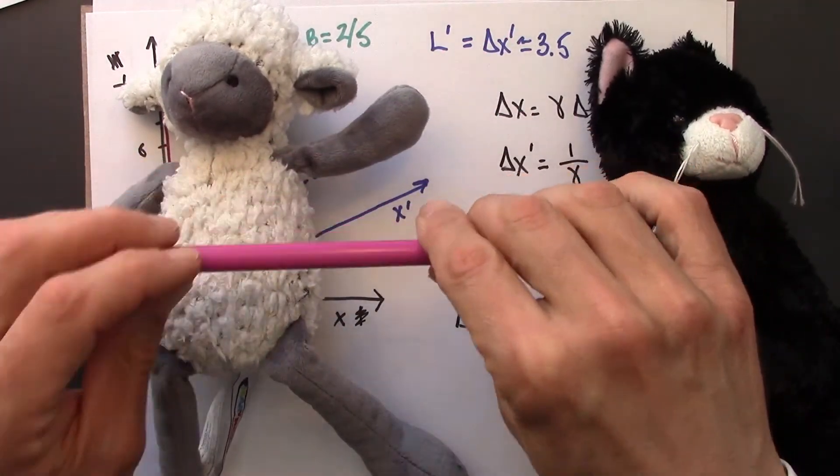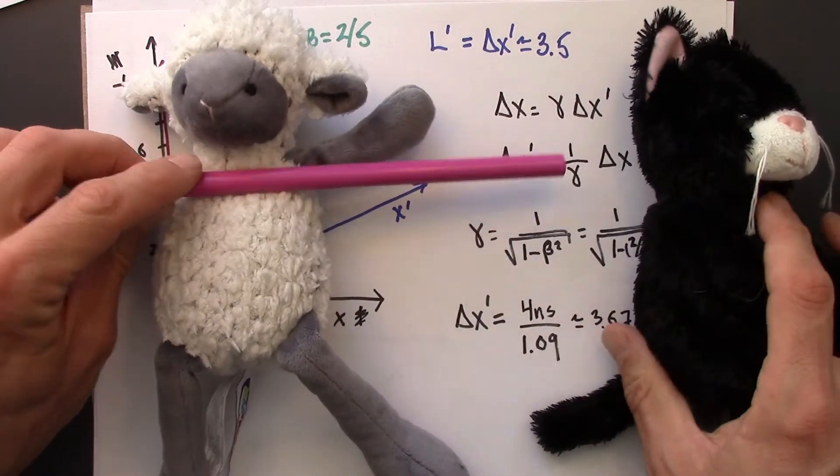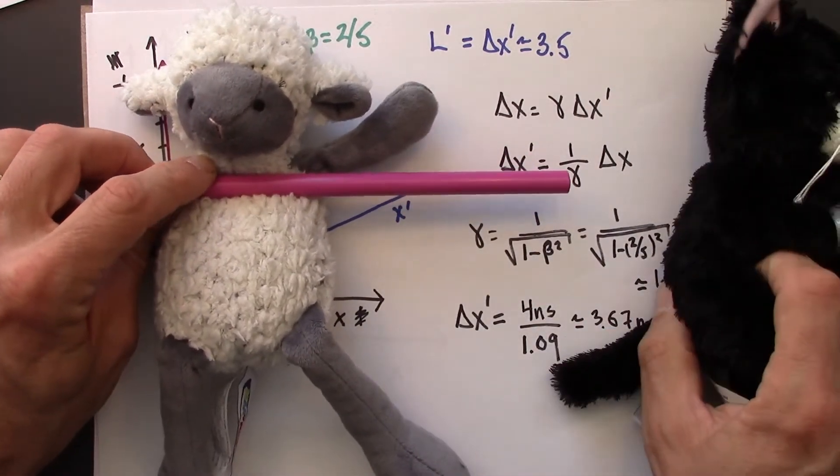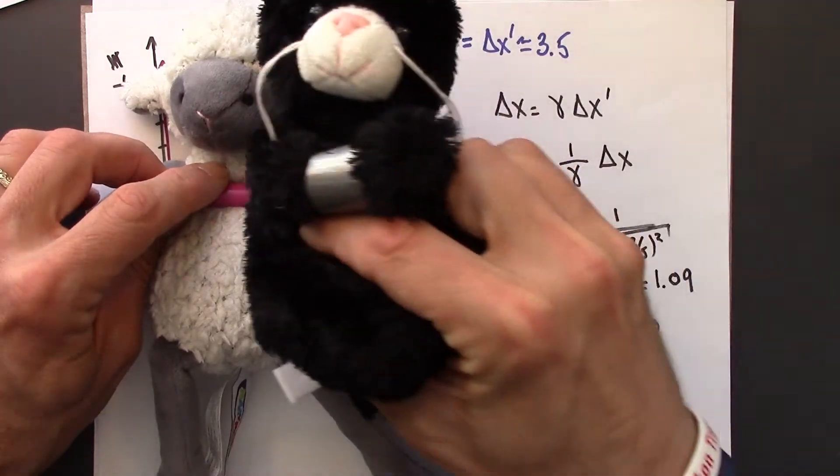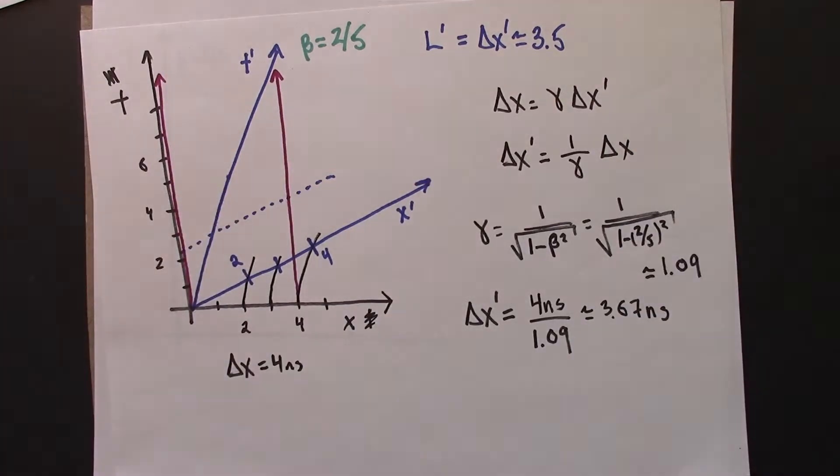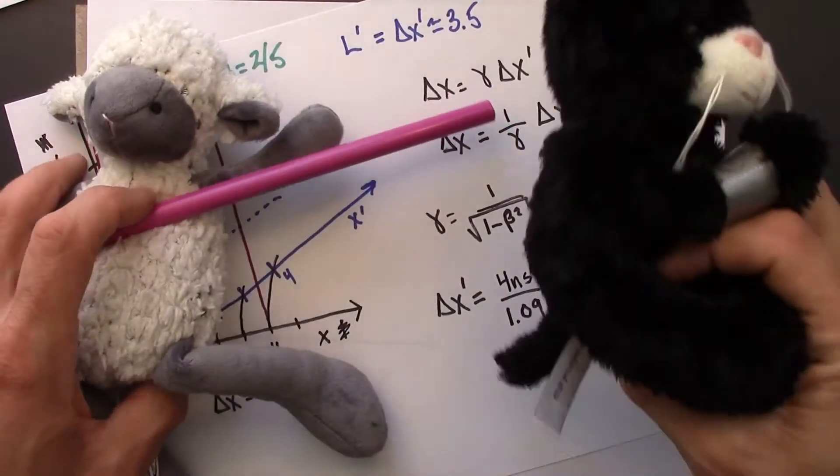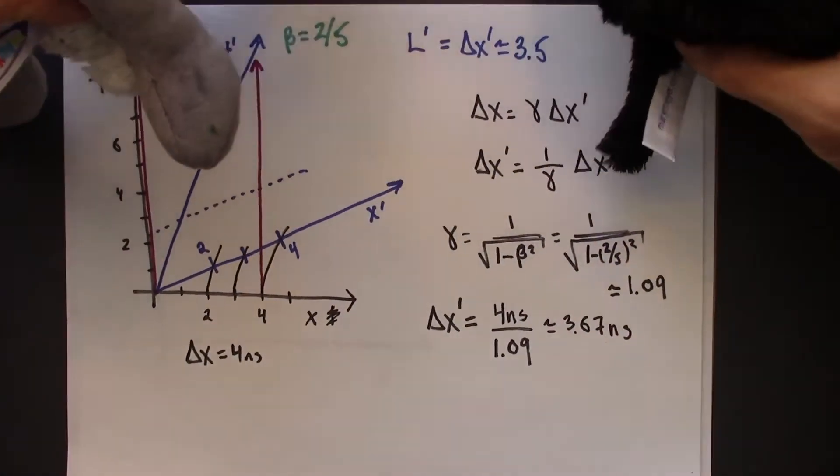So we previously analyzed the situation where Anastasia and a 4 nanosecond stick are at rest in Anastasia's frame and Beowulf zips by at a beta of 2 fifths. So that's the analysis that's shown here. What I want to do now is analyze a slightly different situation.